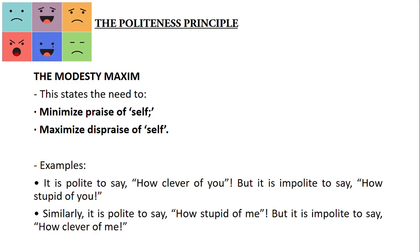The next maxim is the modesty maxim, and it states the need to minimize praise of self and maximize dispraise of self. It is polite to say 'How clever of you,' but it is impolite to say 'How stupid of you.' Similarly, it is polite to say 'How stupid of me,' but it is impolite to say 'How clever of me.'